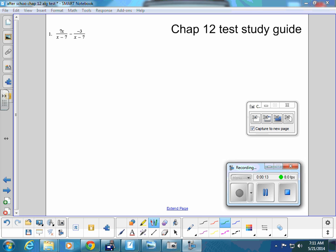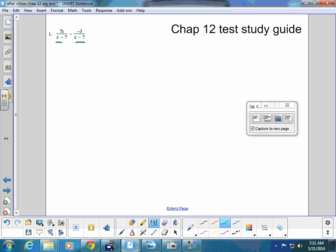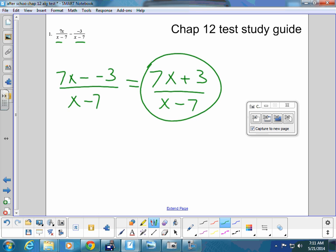So the first question, the denominators are the same, so I'm going to just do the subtraction on top, and I need to be careful because I have minus a minus, so my answer is going to be 7x plus 3 over x minus 7, and I can't do anything else with this, so that is my final answer.